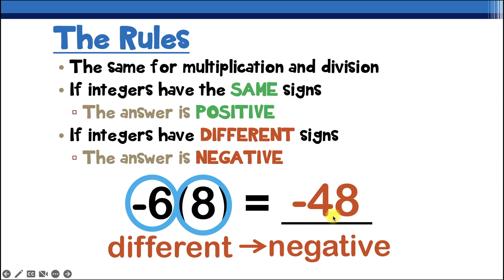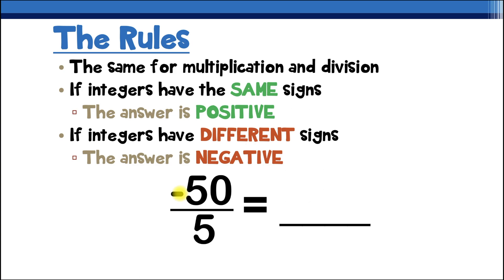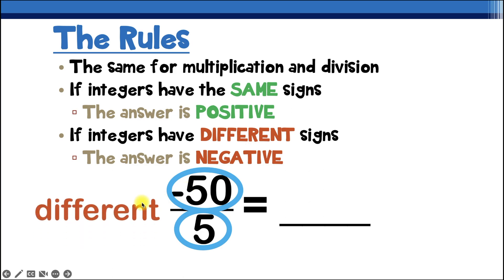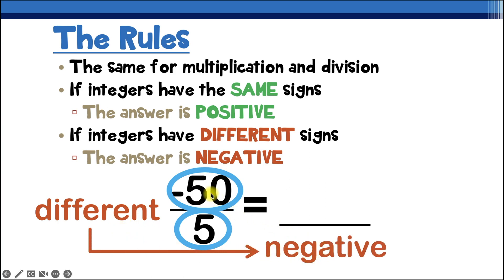This one looks a little different too, but remember: when you have numbers represented as a fraction, this also represents division. We've got negative 50 as our first number, which is negative, and 5 as our second number, which is positive. The signs are different, so our answer is going to be negative. 50 divided by 5 is 10, but the answer is negative 10.